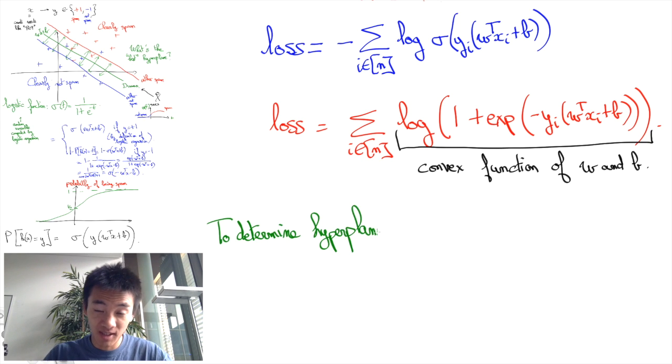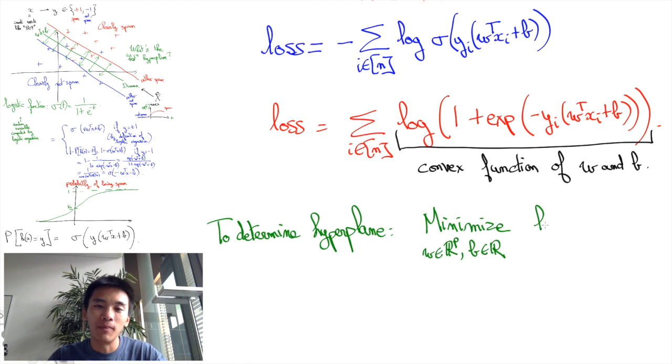And there's a huge literature that basically shows that minimizing convex functions is an easy problem in computer science. You can solve it efficiently using nice software.